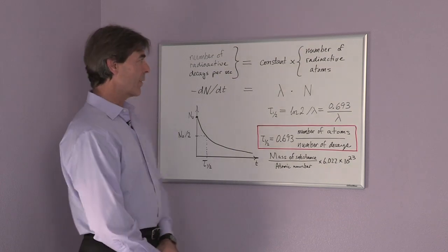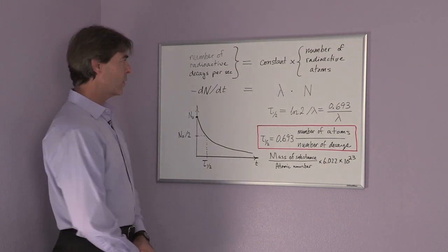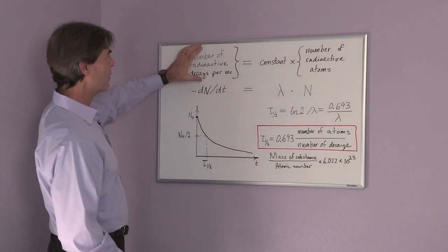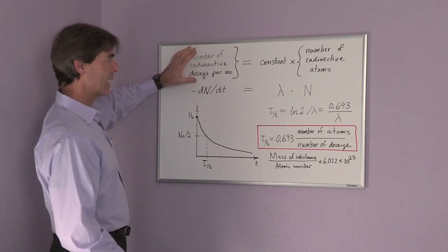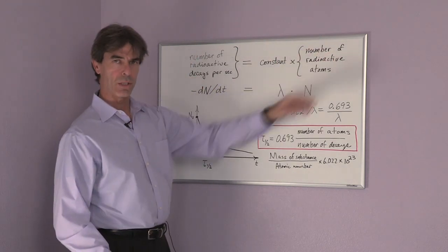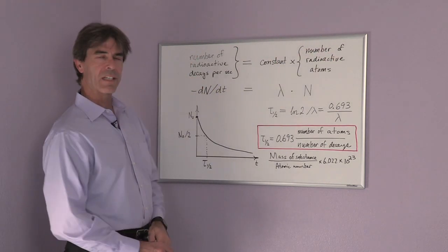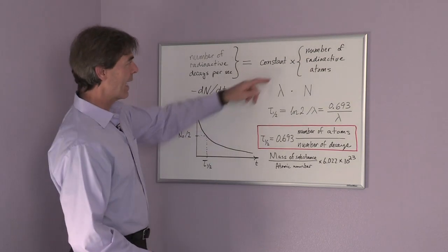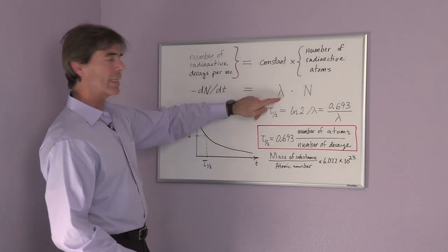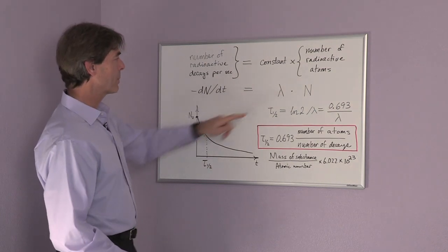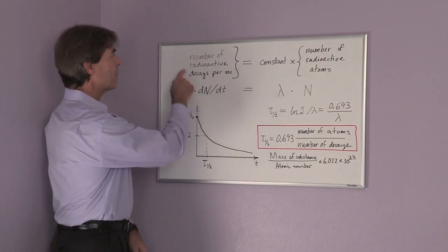There's a well-known formula that the number of radioactive decays per second is proportional to the number of radioactive atoms you have. This constant of proportionality is usually called lambda. The number of radioactive decays per second decreases the number of radioactive atoms you have, which is given in the formula as